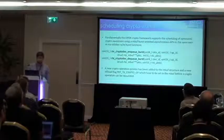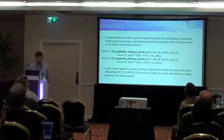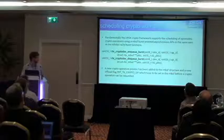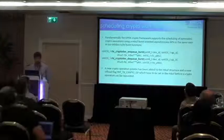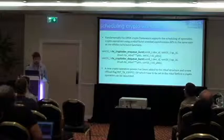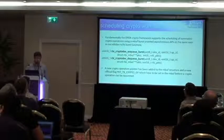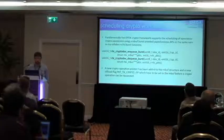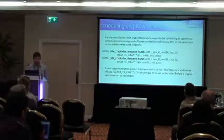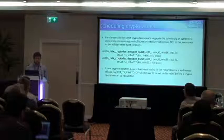Fundamentally it's a burst-oriented API. The main APIs for enqueueing data to a crypto device look very much like an ETH device. Instead of RX and TX, you've got an enqueue burst, which loads the work out to the crypto device to get processed. Then asynchronously you can call the dequeue on the other side.